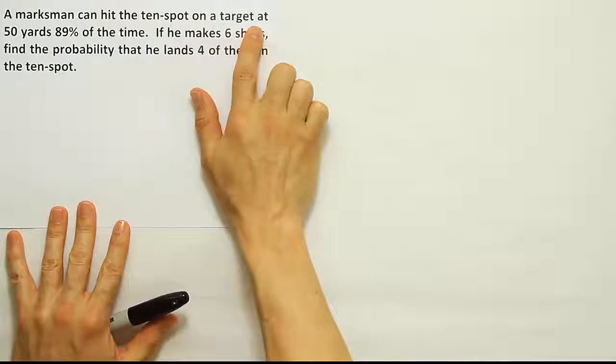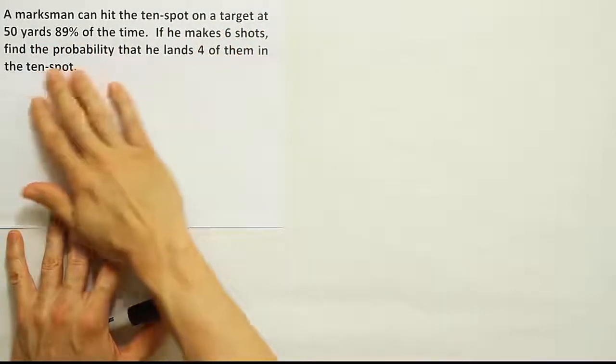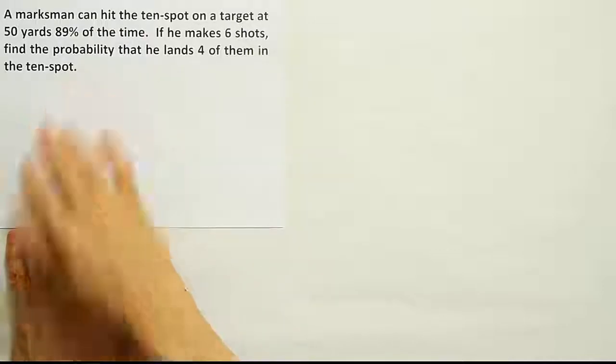A marksman can hit the 10 spot on a target at 50 yards 89% of the time. If you make six shots, find the probability that he lands four of them in the 10 spot.